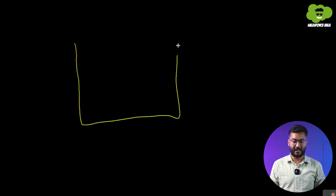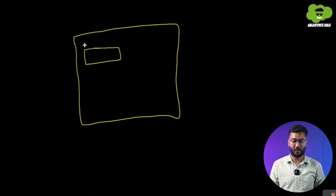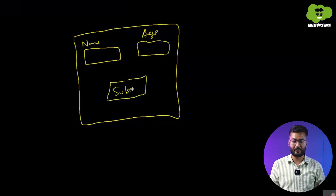We'll be taking the same UI that we created with SLDS — a component with two fields, name and age, and a submit button. We'll implement the same UI using the component library, and that will help you understand the difference between SLDS and the component library.